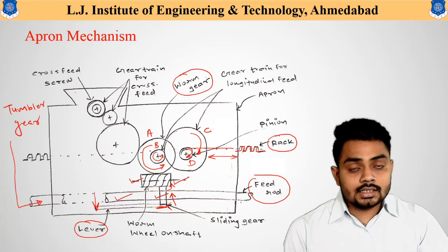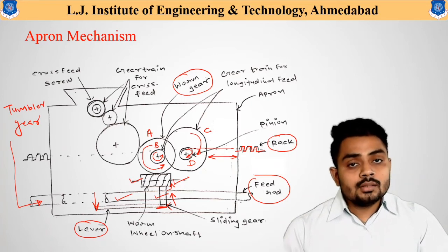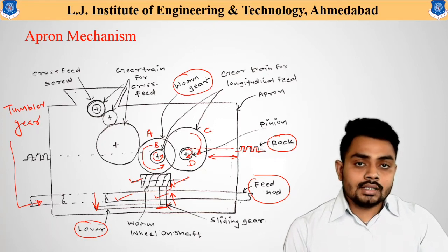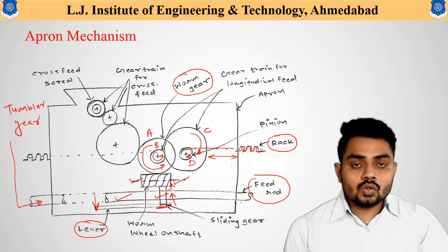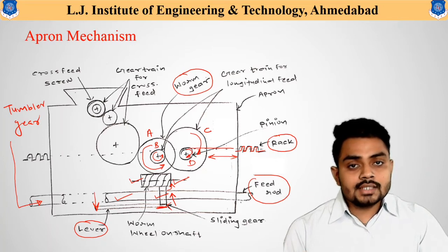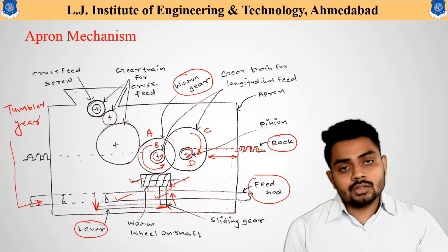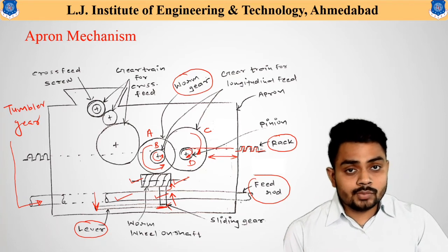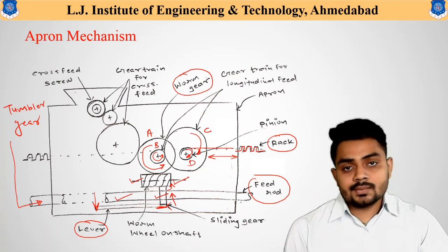As gear D rotates automatically, the entire carriage moves in the longitudinal direction — from headstock to tailstock or tailstock to headstock — based on the rotation direction provided to the feed rod. That is how the first movement, the longitudinal movement, is obtained automatically using the apron mechanism.